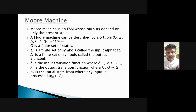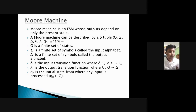Moore machine is a FSM whose output depends only on the present state. It is also described by six tuples: Q, Sigma, Delta, Del, Lambda, and Q0. Q is the finite set of states, Sigma is the input alphabet, Delta is the output alphabet, and Del is the input transition function which maps Q cross Sigma to Q. Lambda maps Q to Delta, meaning output depends only on the current state. Q0 is the initial state where inputs are processed.